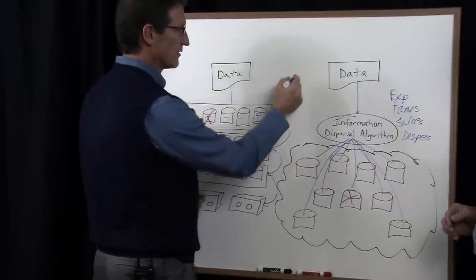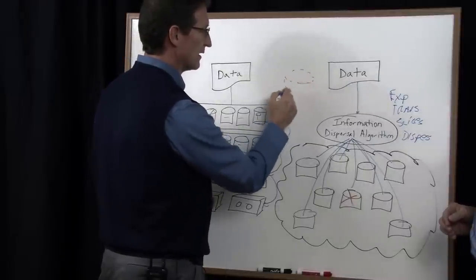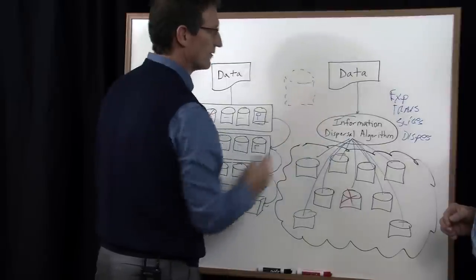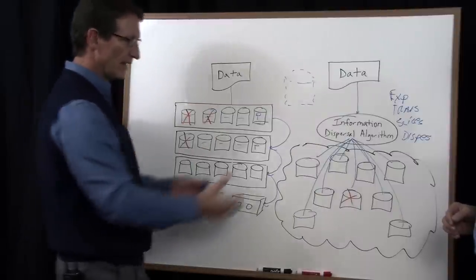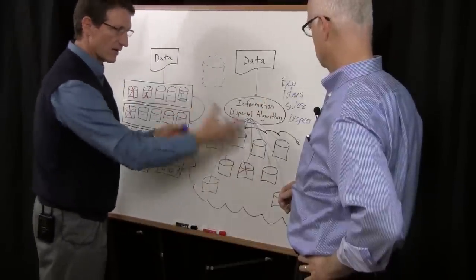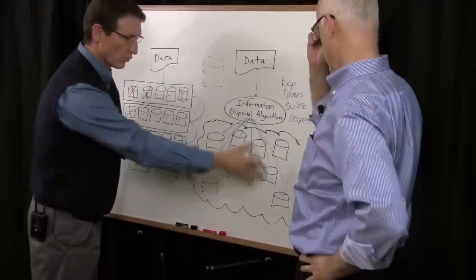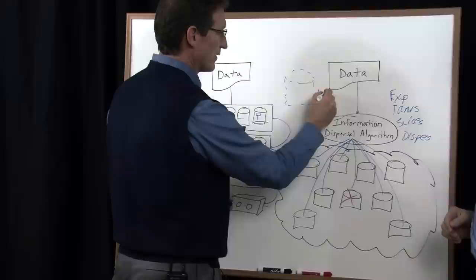In an information dispersal system, you have a container, a logical container. There are certain properties that you establish with the data you're going to store. In this example, we have nine slices of data that are generated and spread out or dispersed across the network. We call that a width of nine.